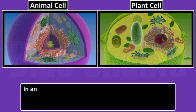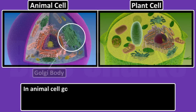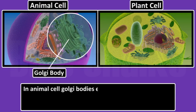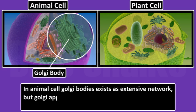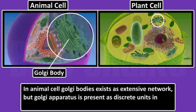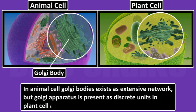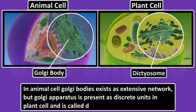In animal cells, Golgi bodies exist as an extensive network, but Golgi Apparatus is present as discrete units in plant cells and is called Dictyosome.